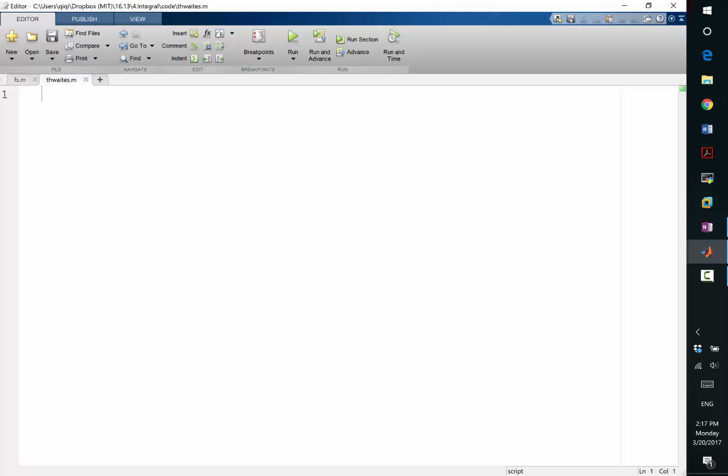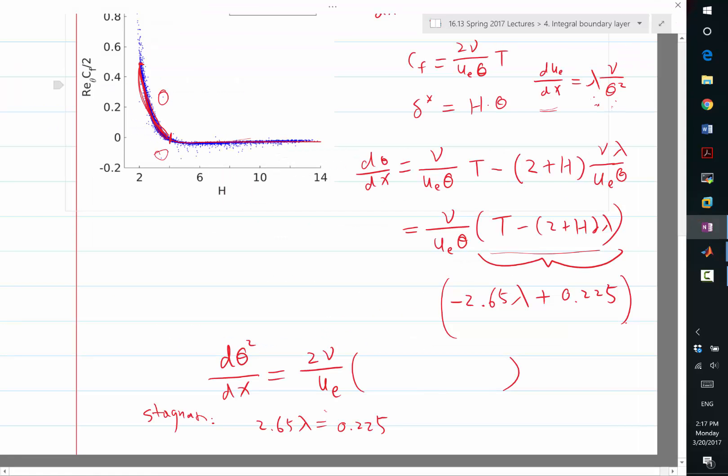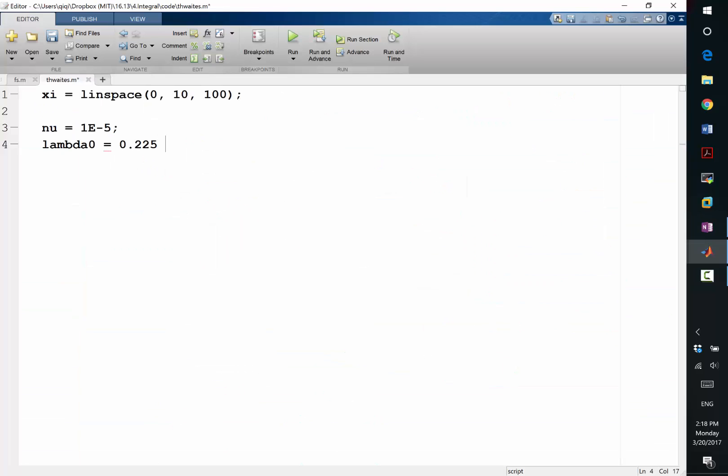So again, let's try to solve the same ue profile as we have from last time. So what we have is x is equal to, let's just make a linspace from 0 to 10, and let's use 100 points to start. And let's, for example, set nu to be 10 to the minus 5. So we are going to start by saying that lambda 0 is going to be 0.225 divided by 2.65. So that's my initial lambda 0.